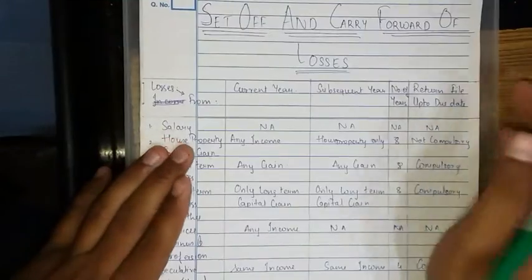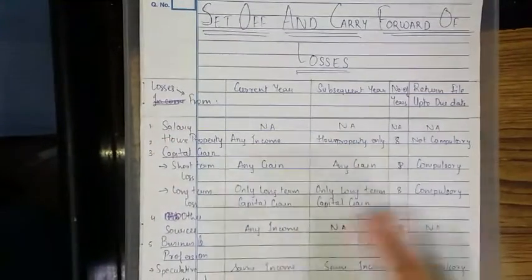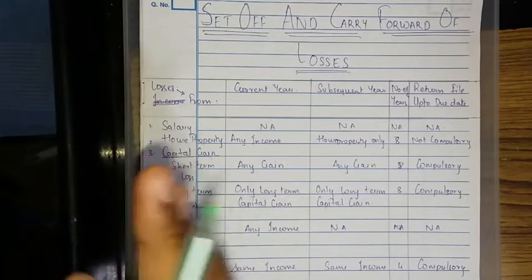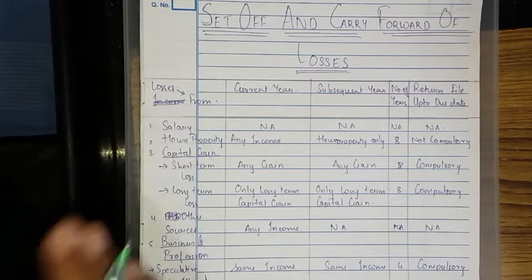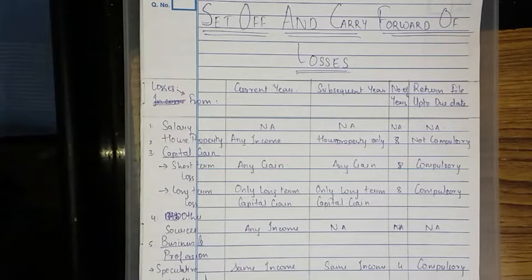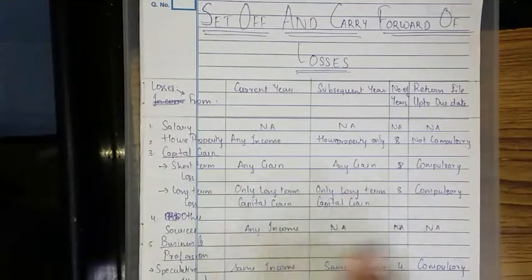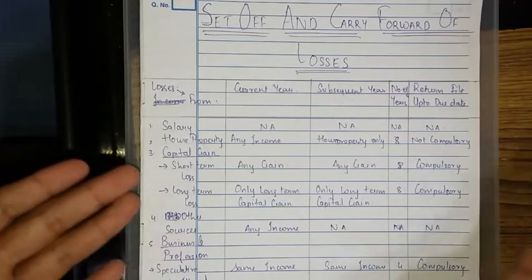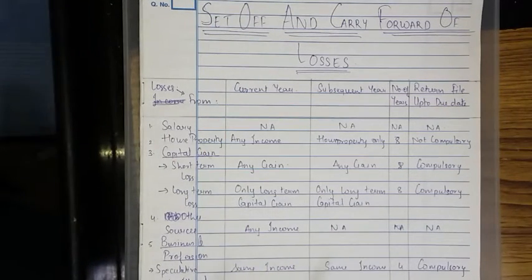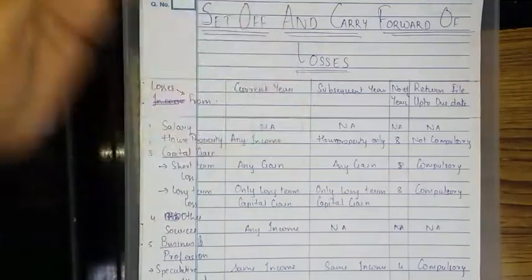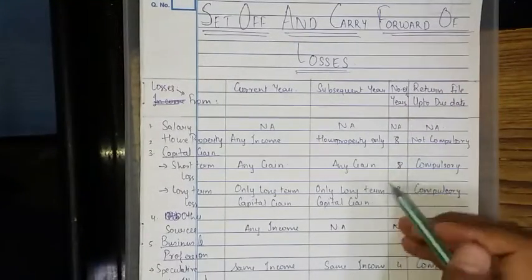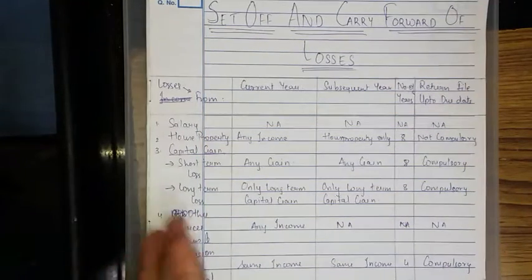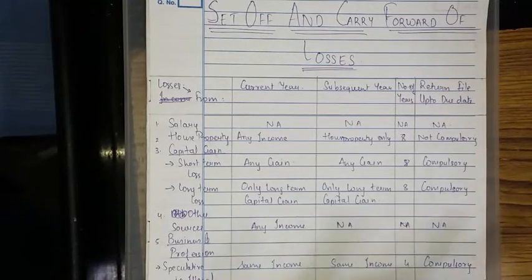Long-term capital gain is taxed at a flat rate of 20%, while short-term capital gain is taxed at the slab rate — 0% up to 2.5 lakhs, 10% from 2 to 5 lakhs, 20% from 5 to 10 lakhs, and 30% above 10 lakhs. Because of this difference, long-term capital loss can only be set off against long-term capital gain. The 8-year carry forward is available, but return filing up to the due date is compulsory; otherwise the assessee won't get the benefit.